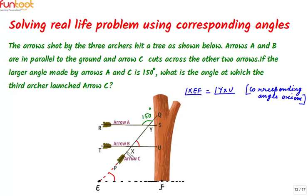Similarly we can see that this angle here will be equal to this angle as these two are also corresponding angles. So angle YXU is equal to angle QYS, once again by corresponding angle axiom.